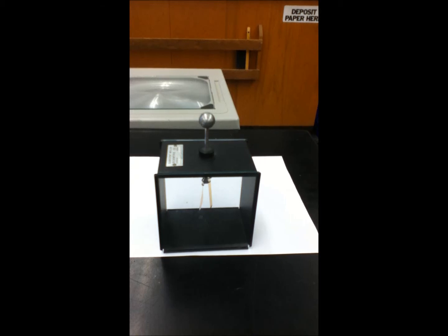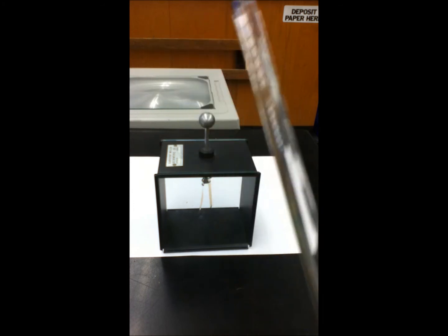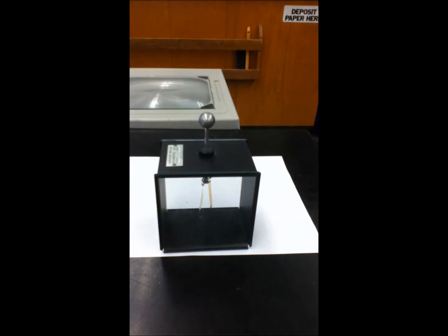This is electroscope demo number 4. We are going to charge the electroscope with contact using a positively charged object. We are going to use the glass rod and charge it with some fur. The glass rod is going to have a positive charge to start with.